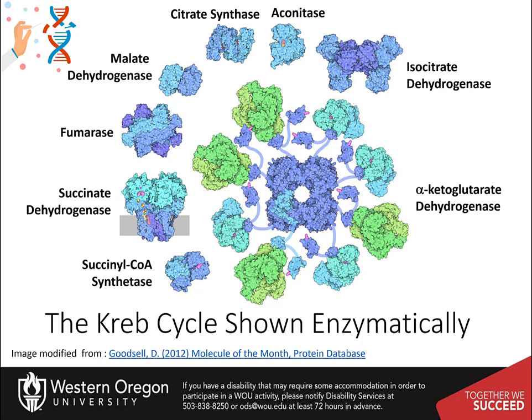The citric acid cycle enzymes, shown here, are found in cells that use oxygen and even in some cells that don't. In addition, all of these enzymatic reactions take place in the matrix of the mitochondria, where they are tethered closely to the inner membrane. The succinate dehydrogenase is actually a membrane-bound protein and participates in the next stage of the process, the electron transport chain.